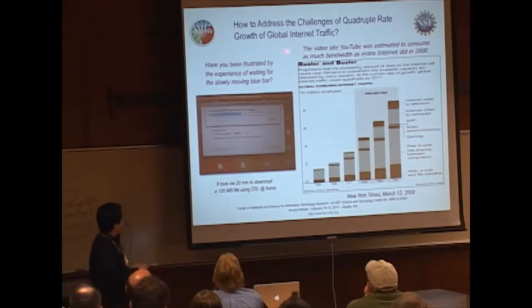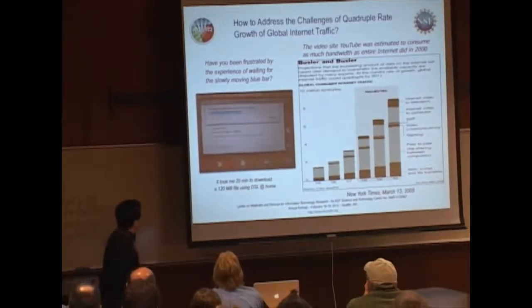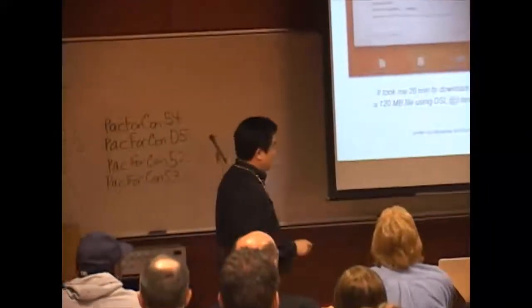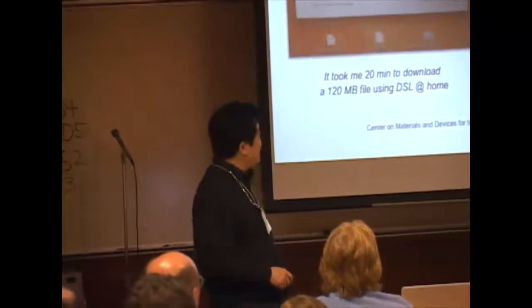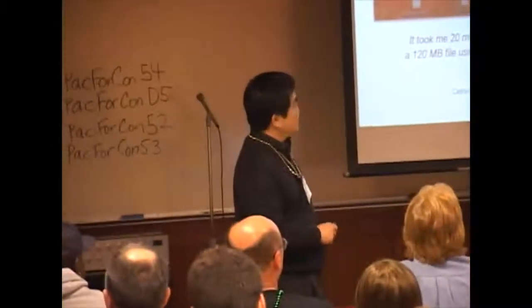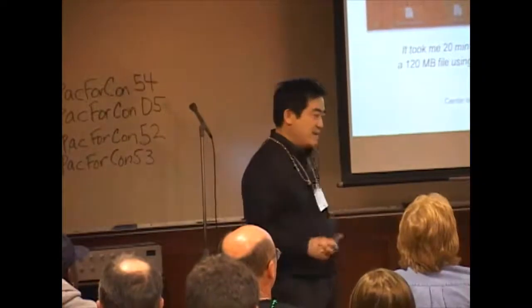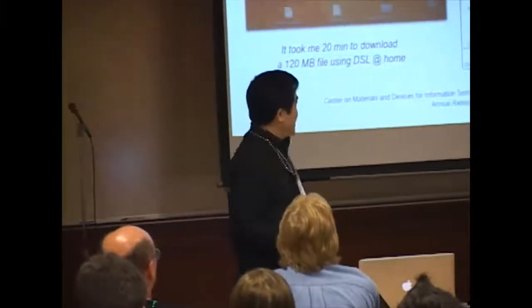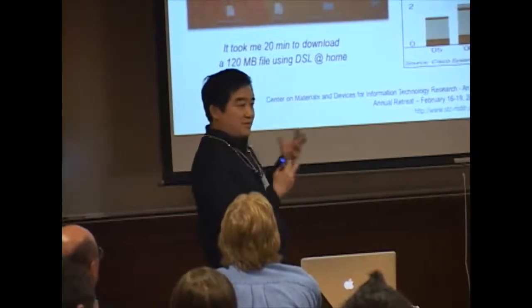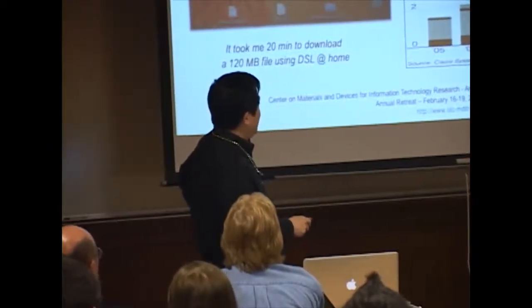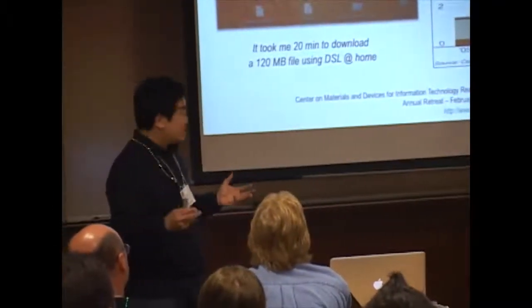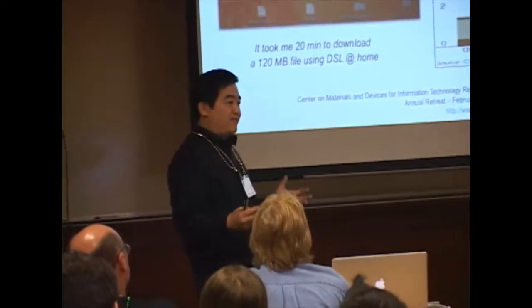The title is: how to address the challenges of a quadruple rate of growth of global internet traffic. This is actually news from the New York Times in 2008, talking about how by 2011 there's going to be a quadruple rate of internet traffic growth. The reason traffic has increased dramatically is that everybody now starts to use the internet for video, for gaming, and for file sharing — all of which occupy a lot of bandwidth.